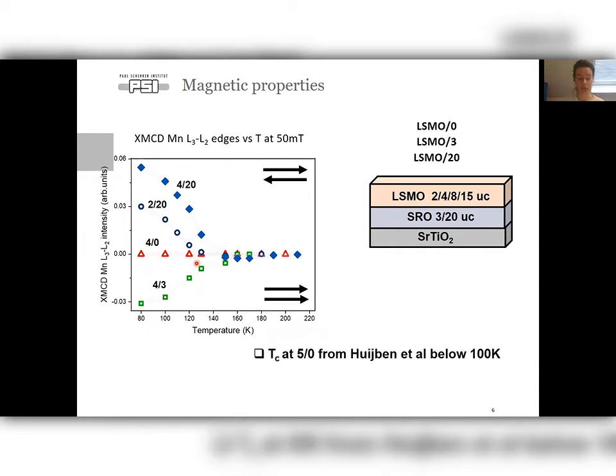Curie temperature for the bilayer seems to be around 150 Kelvin, that is higher than what was observed for single LSMO film with similar thickness. Such a TC increase and enhanced magnetism allows us to conclude that magnetic properties have been improved dramatically.